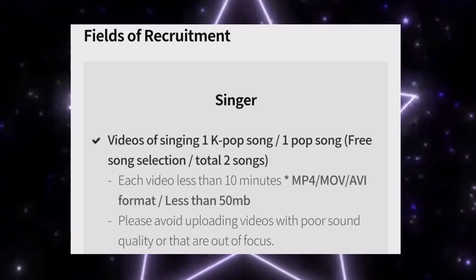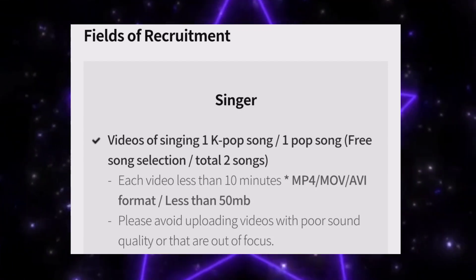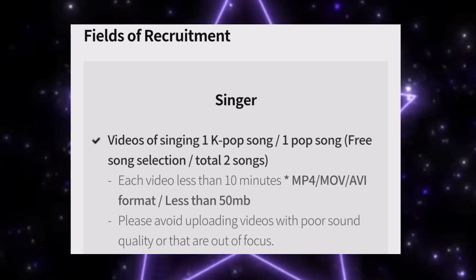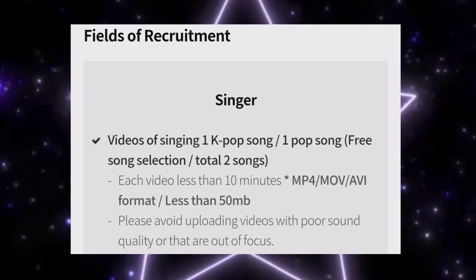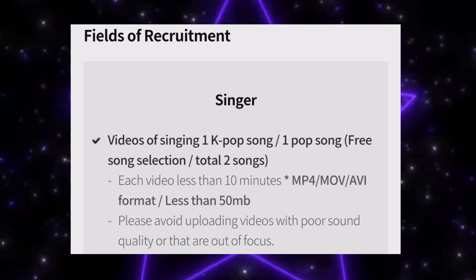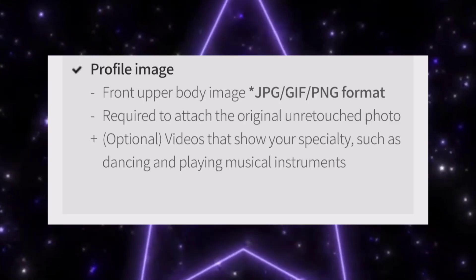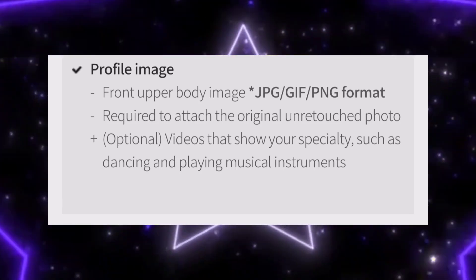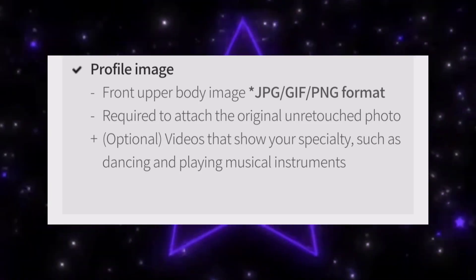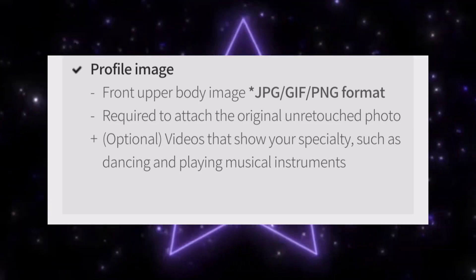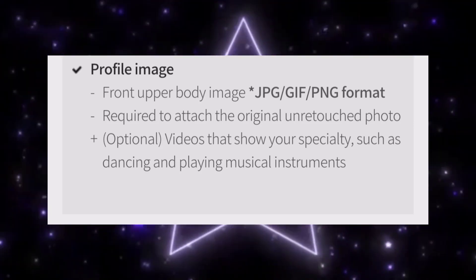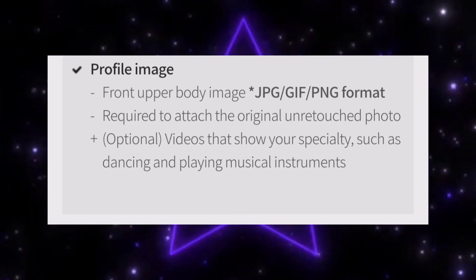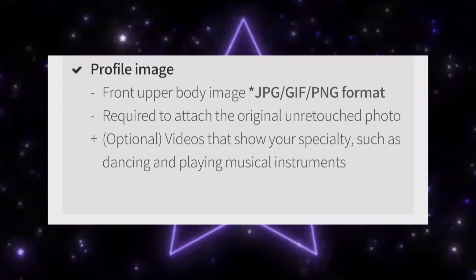Please avoid uploading videos with poor sound quality or out of focus. In your audition video, your full upper body should be visible for singing category and rap category. I always say: prepare one K-pop song and one pop song — K-pop songs are what most companies prefer. A front body picture is required. Additional photos showing specialties such as dancing or playing an instrument are optional.